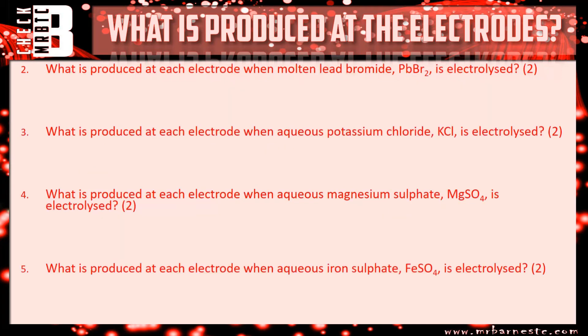Question two: what is produced when molten lead bromide is electrolysed? It's molten, so at the cathode you're going to have lead, and at the anode you're going to have bromine.